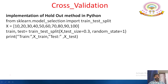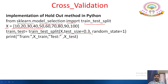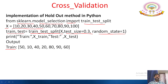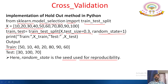For the Python implementation of holdout, the data X contains values from 10 to 100. Train and test data are split using the train_test_split function — the data is divided 70/30 with random_state equal to 1. The output shows that data values are randomly extracted into training and test sets. The random state is the seed used for reproducibility.